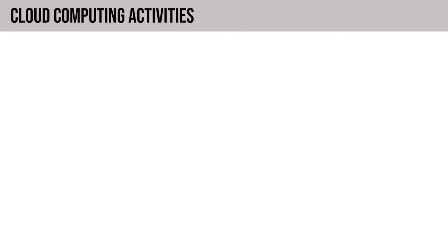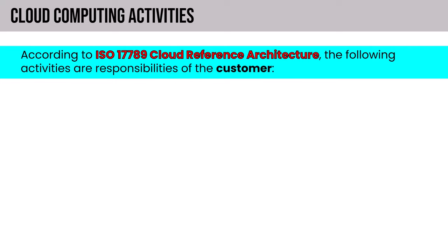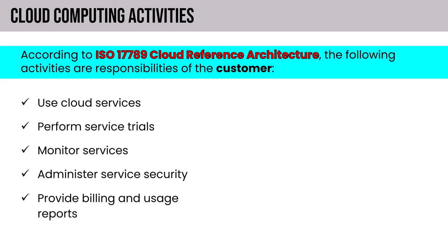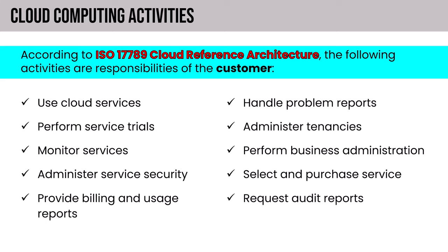Looking at activities according to ISO 17789 cloud reference architecture, the following are responsibilities of the customer: using cloud services, performing service trials, monitoring, administration, billing and usage reports, handling problem reports, performing business administration, administering cloud tenants, selecting and purchasing services, and requesting audit reports.